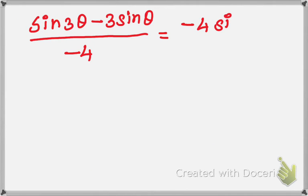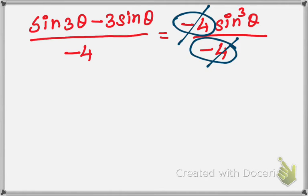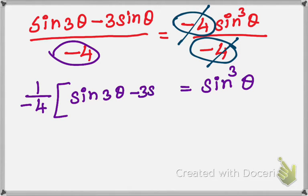We have minus 4 sin³θ over minus 4. Cancel the common terms — minus 4 and minus 4 cancel. So minus 1 by 4 is the common factor outside. The remaining term inside is sin 3θ minus 3 sinθ.